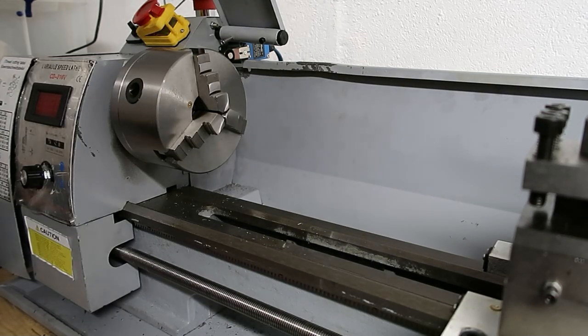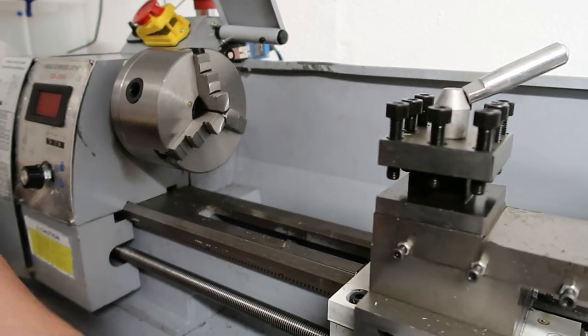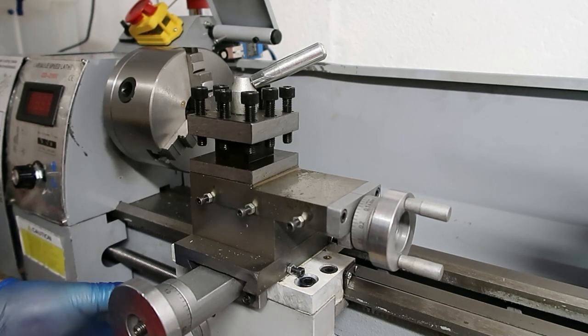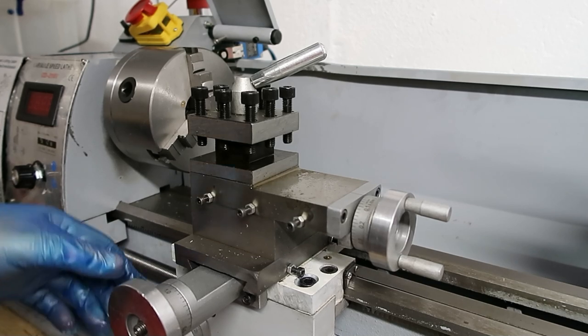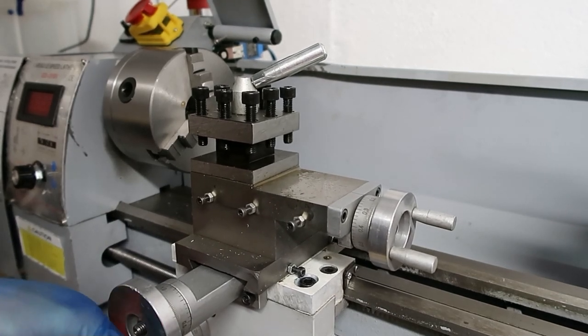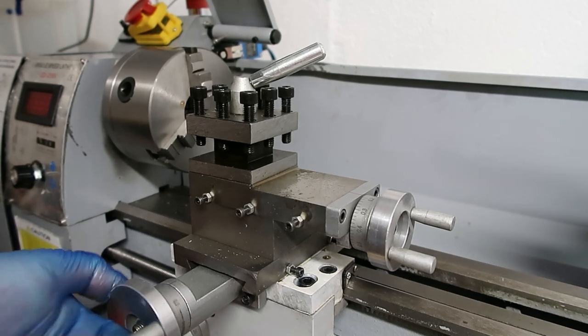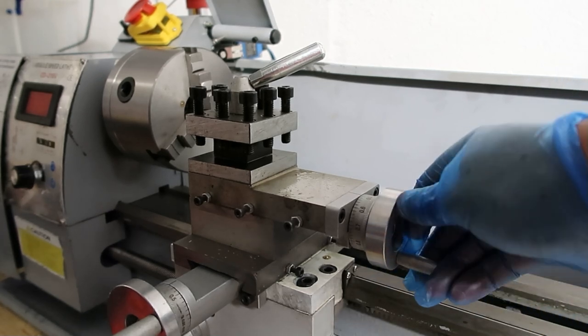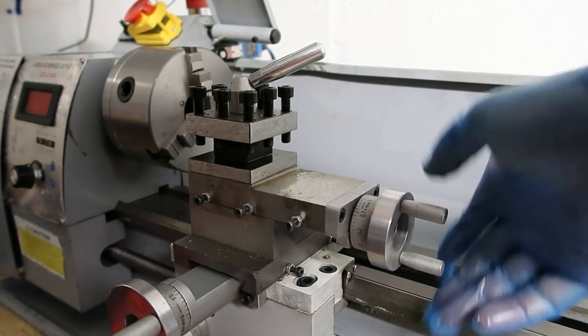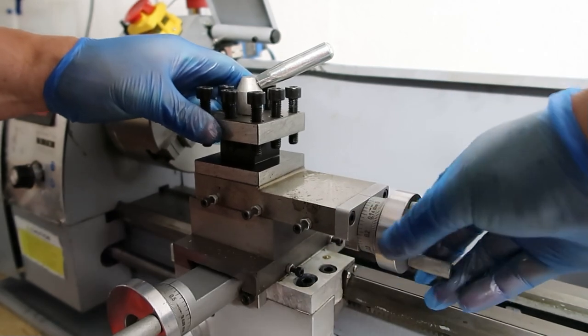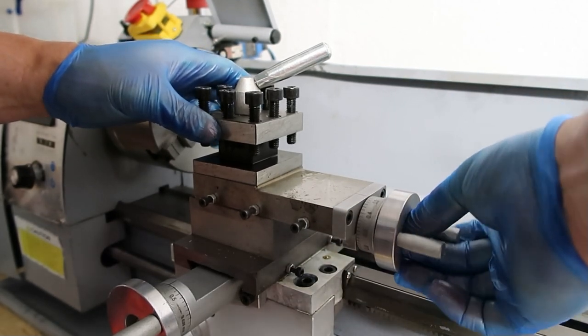In terms of using a lathe, if you haven't used one before, you've got your saddle traverse. This thing's graduated - there's quite a lot of play in this, so you'd have to take with a pinch of salt. And this is the cross slide. Again, this has got graduations on it, but I would take with a pinch of salt. I'd just keep measuring the piece. And this is the tool post.